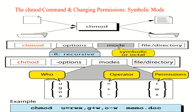The chmod syntax is: chmod [category] [operation] [permission] [filename]. The category (who) refers to user (u), group (g), others (o), or all (a). The operation uses plus (+) to assign or minus (-) to remove permissions. The permission type is read (r), write (w), or execute (x). The expression contains three components: who, operation, and type of permission.